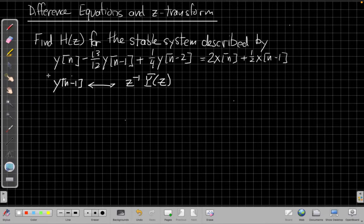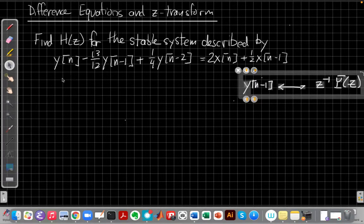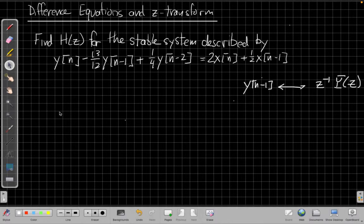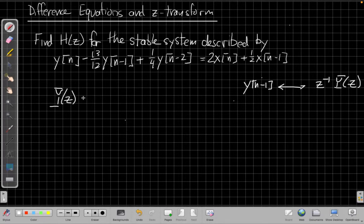So if I use that property, let me just sort of move that over to the side here for a second out of my way. I'll take the Z-transform one term at a time here. So I have Y(z).